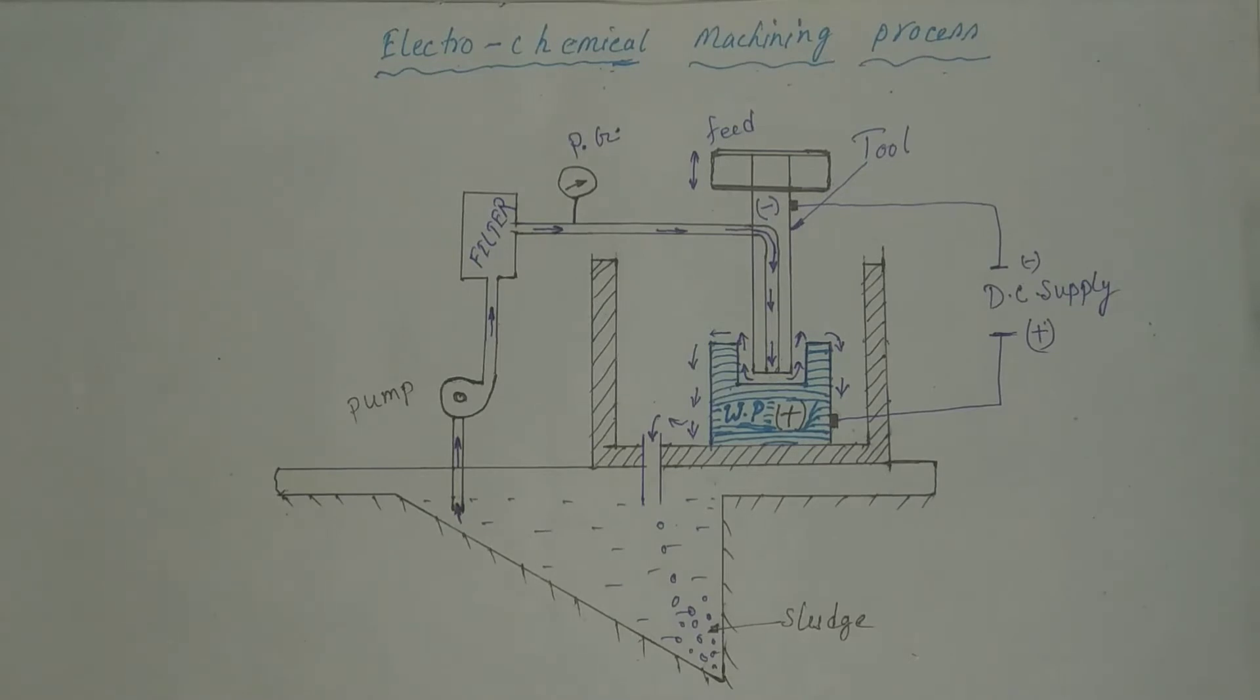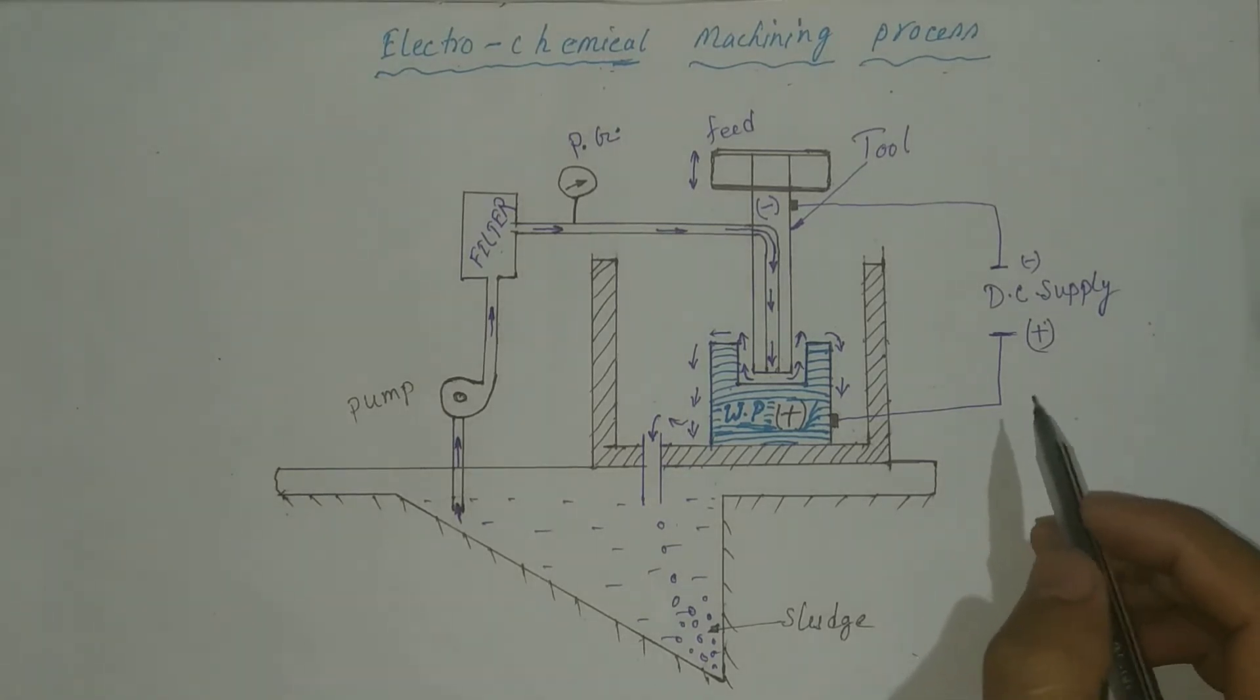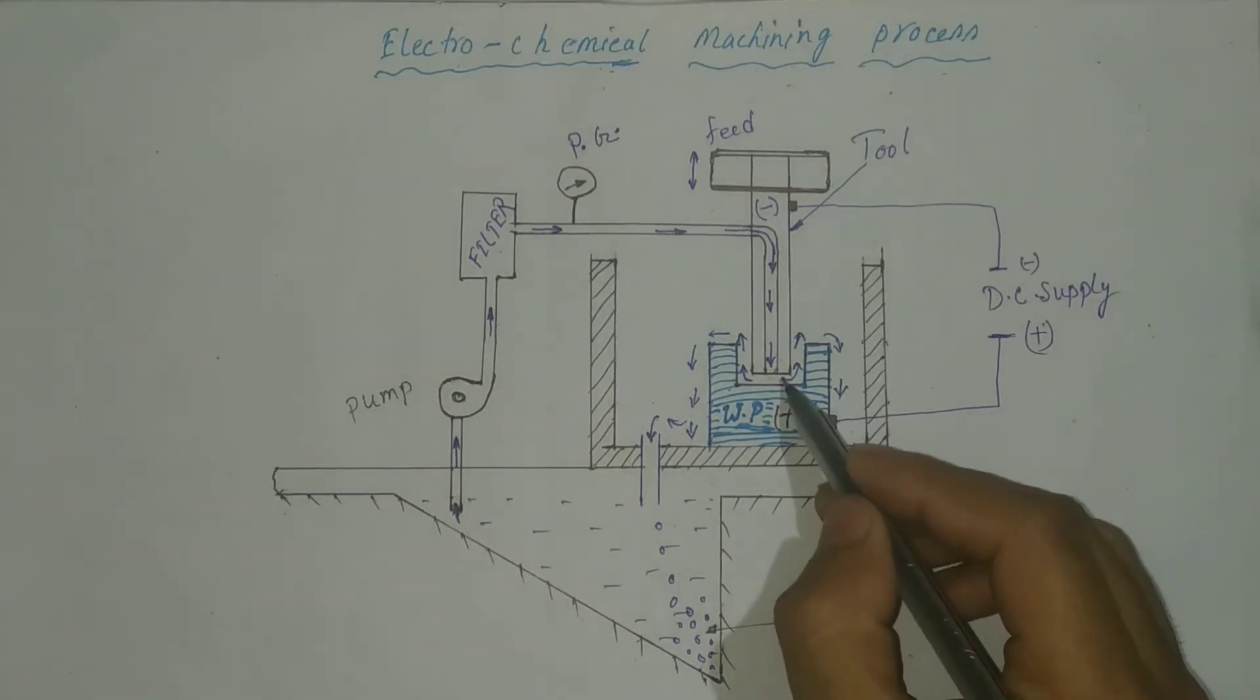Now, how it works. This process is almost same as EDM process, except that EDM uses dielectric fluids and ECM uses electrolyte. A very small gap of 0.5 mm is provided here between the tool and the workpiece.